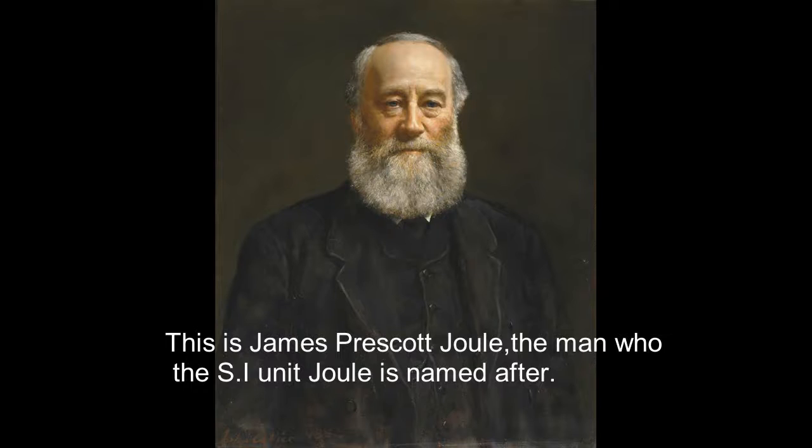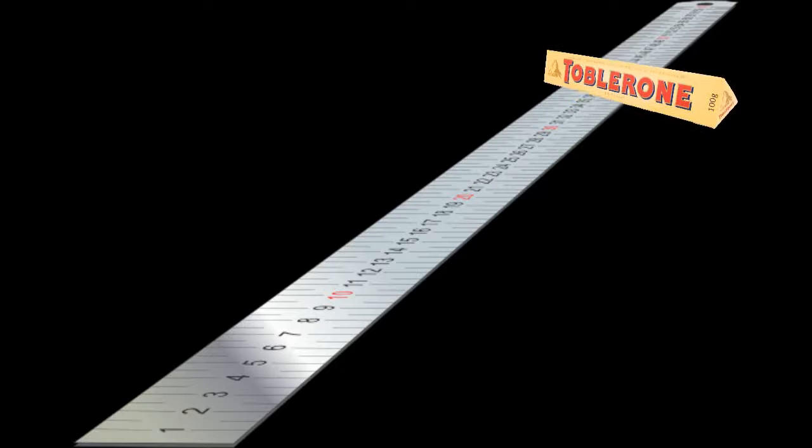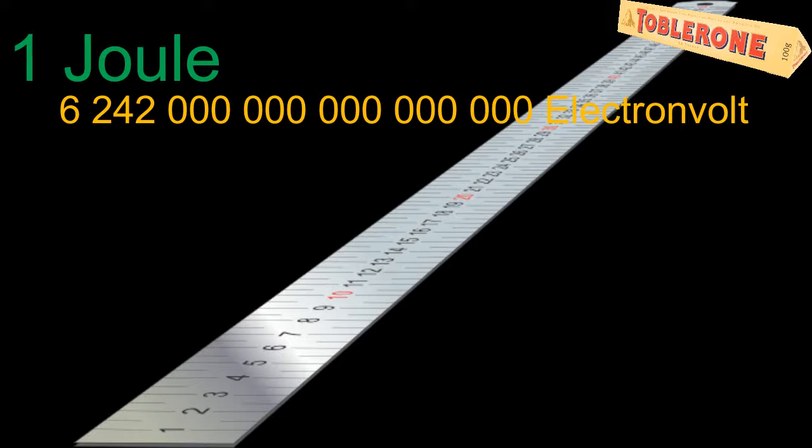Now wait a second — what exactly is a joule you might ask? To give everybody a better understanding of a joule, we are going to refer to this equation. The simplest one is the Newton meter. So if you take a Toblerone bar and move it about a meter, we've expended 1 joule of energy, or in eV about 6.2 times 10 to the power of 18 electron volts.